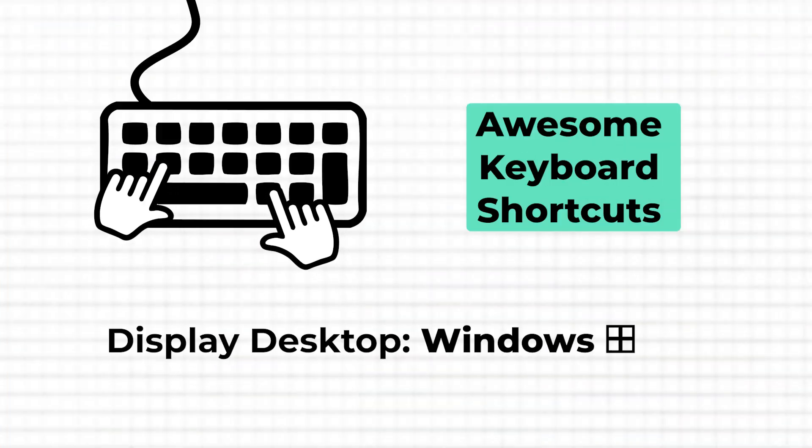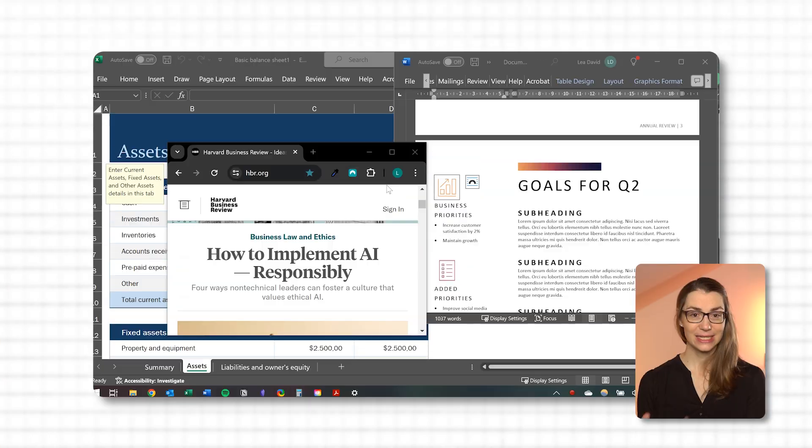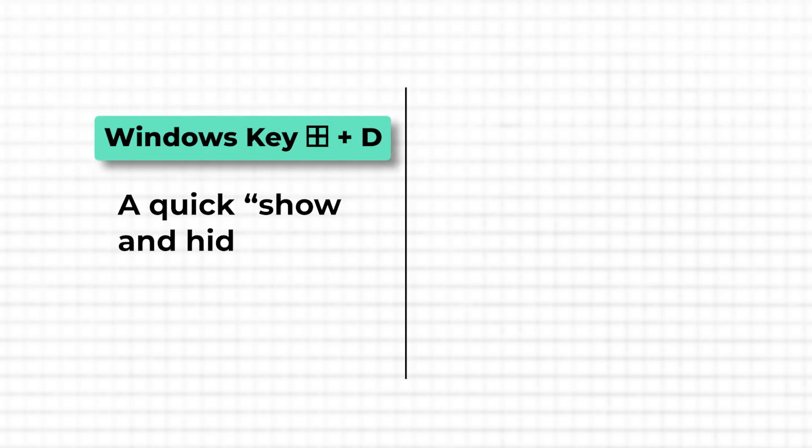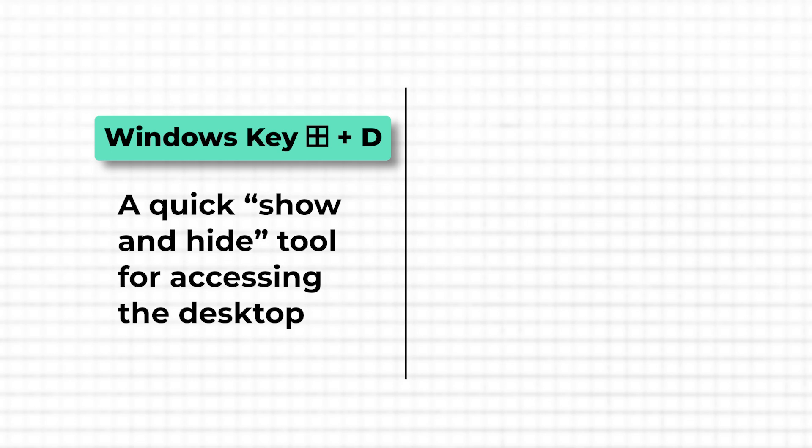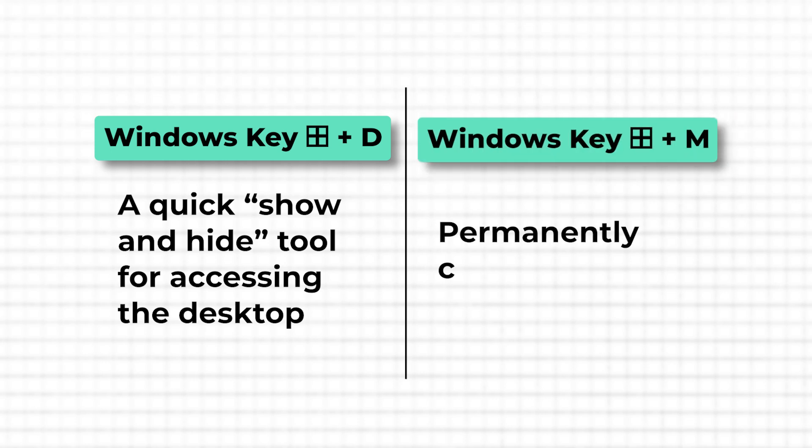The next shortcut is very similar but with a tiny difference. Pressing Windows plus D also minimizes all open windows, allowing you to see the desktop without closing any applications. Pressing Windows D a second time brings back all the windows exactly as they were. The difference between Windows D and Windows M is that Windows D is more of a quick show-and-hide tool for accessing the desktop while keeping your workspace ready to restore at a moment's notice, whereas Windows M is more about clearing the screen with a bit more permanence, requiring a different shortcut to bring everything back. This makes Windows D generally more convenient for rapid desktop access.